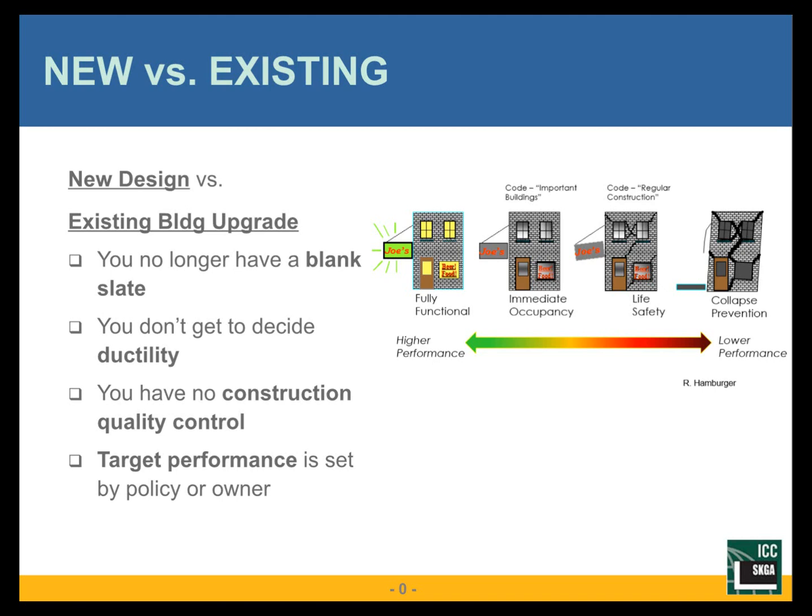Another difference in existing buildings is that the target performance is typically set by policy of the building owner. In the new building code arena it's a straightforward pass or fail — it meets code or it doesn't. In existing buildings it's different: we target an actual performance objective that ties together the seismic hazard — what is the actual potential earthquake hazard for that site — and what is the acceptable performance for that hazard. AC41 has been used in the context of voluntary upgrades, but especially with ordinances, policy may ultimately decide what that is. It's not as straightforward as a yes or no.